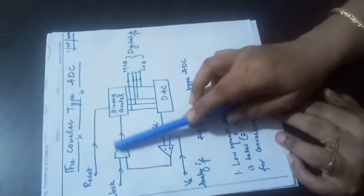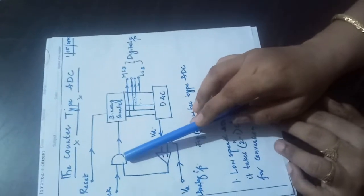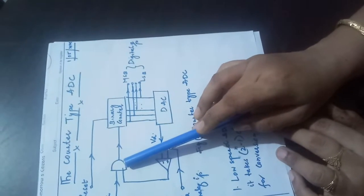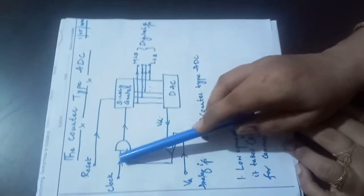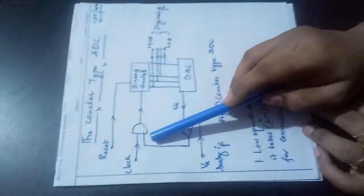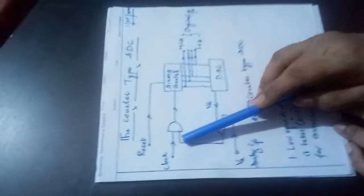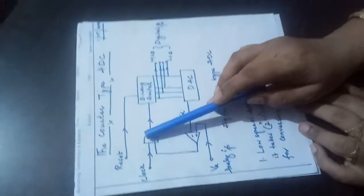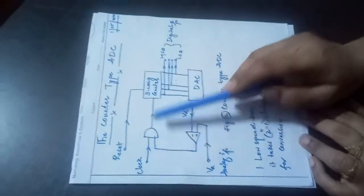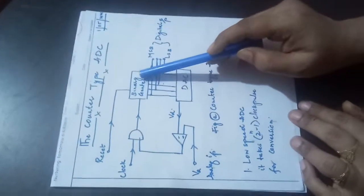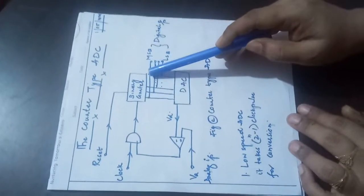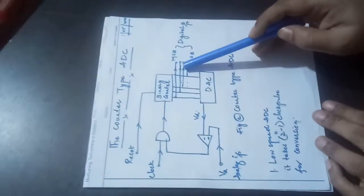This clock has to pass through the AND gate. The AND gate is going to be enabled when both inputs of the AND gate are high. Then this AND gate is going to be enabled, and the clocks are passed to this binary counter, and the binary counter is going to start the counting.